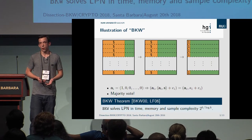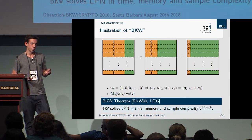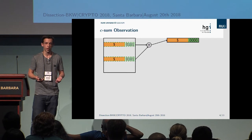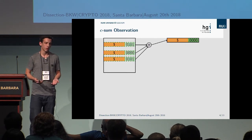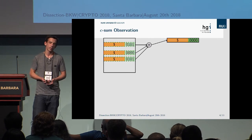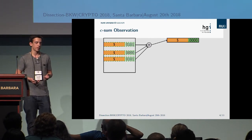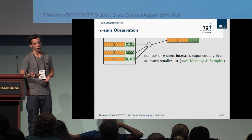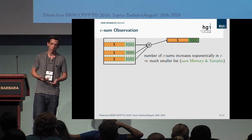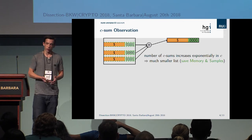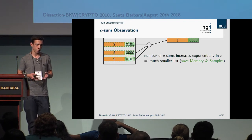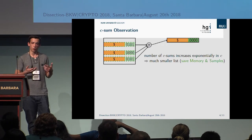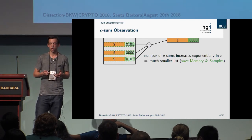How do we construct time-memory trade-offs? The key observation is that we do not need to restrict the algorithm to forming pairs of vectors to eliminate a stripe. We could allow the algorithm to sum up C vectors instead. The advantage is that the number of combinations of C elements increases exponentially in C, and so does the number of combinations adding up to zero on a stripe, allowing us to start with a smaller input list.